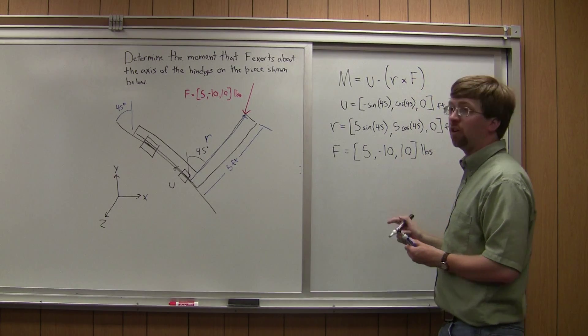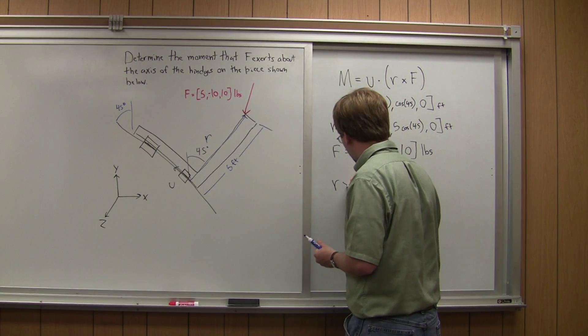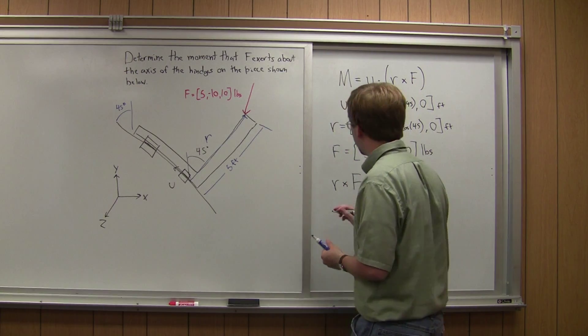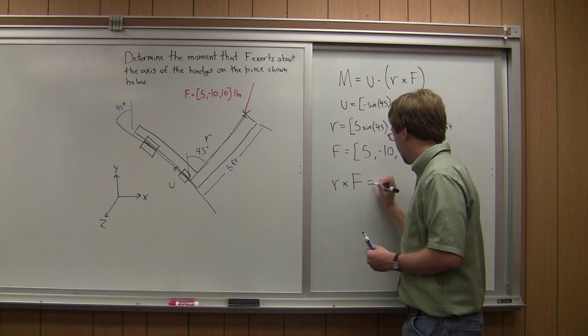So the first thing I need to do is R cross F. So R, the vector R crossed with F, and again, you need to do it in the right order here, is going to be equal to